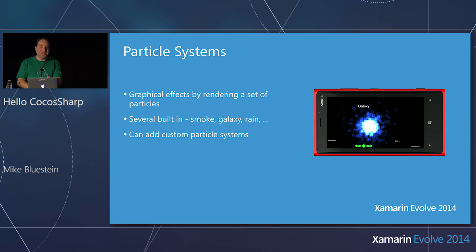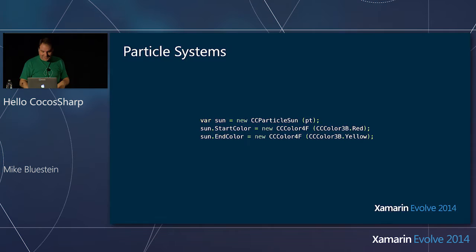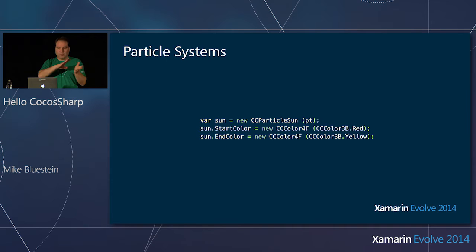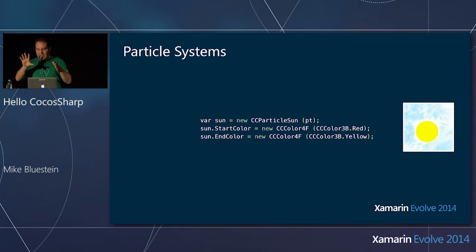Really easy to program against — very high-level API can create very interesting things. Here's the code to put the sun particle system up. There are some properties on each one to control things like emission rates and where the colors morph at the beginning and end of the particle. I've got the sun as a particle system, and I also have a primitive to draw a circle, blending them together to get the effect I want. It turned out to look like a fried egg.